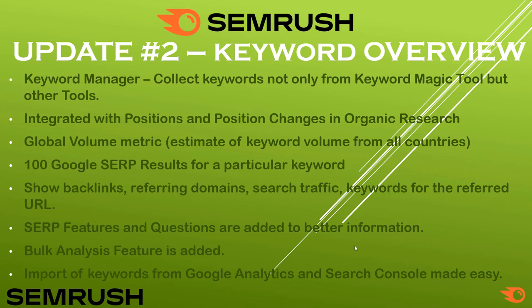You can now see the top 100 Google search results directly within SEMrush without going to Google's website. For each URL appearing in Google search engine ranking positions, you can see the backlinks, referring domains, search traffic, and keywords. SERP features and questions have also been added to the Keyword Overview report.